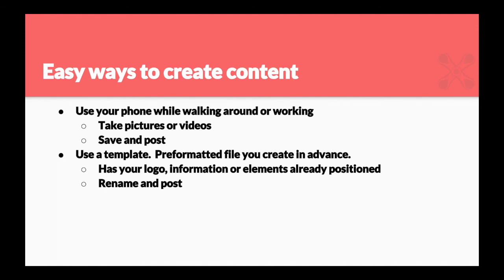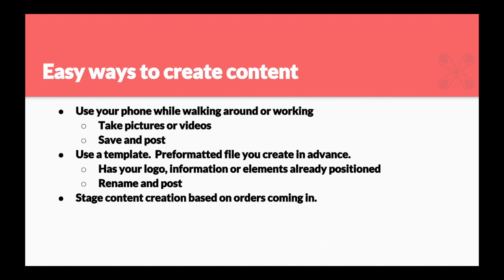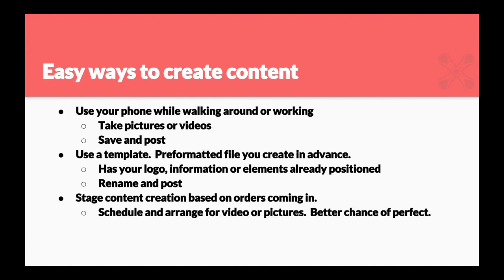The next idea is to stage content creation based on orders coming in. For instance, it's fall and you want more hoodie jobs — you fake it. Stage a hoodie order, bring it over to a press, set it up, take a picture, and post 'Hey, hoodies! Don't you need them? We've got new ideas, like drawstrings that light up.' You can stage this in advance as a sales opportunity. You don't have to wait for orders — set it up well in advance and schedule your videos so everything is perfect because you're not being rushed.